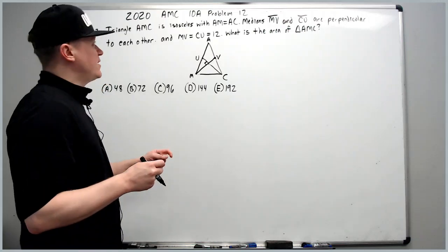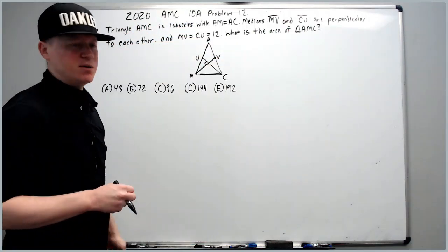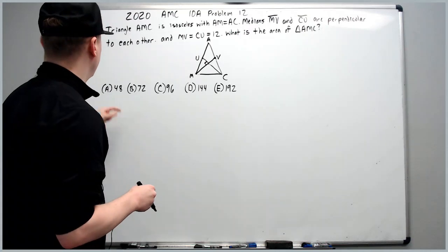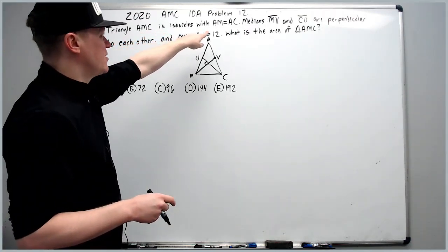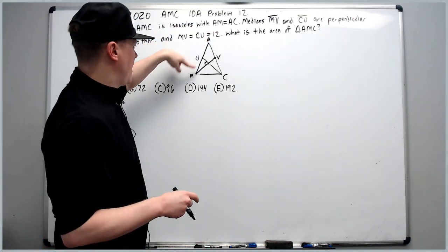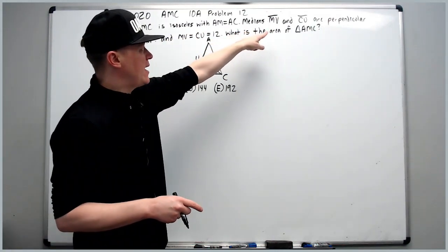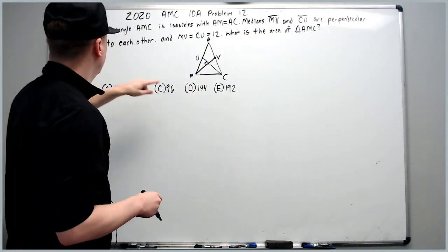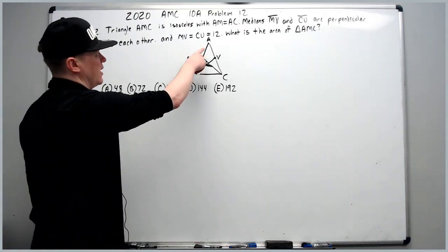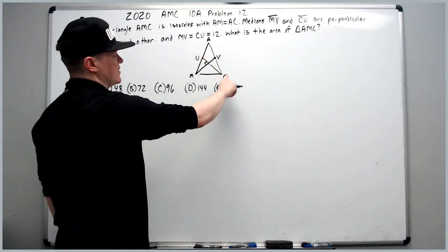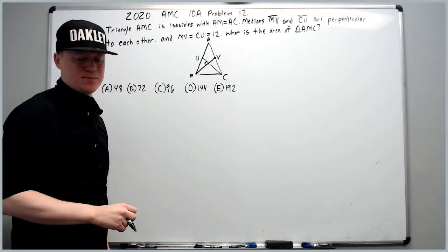Continuing on with the 2020 AMC 10A, problem number 12. Triangle AMC is isosceles with AM equal to AC. Medians MV and CU are perpendicular to each other. MV is 12 and CU is 12. What is the area of AMC?